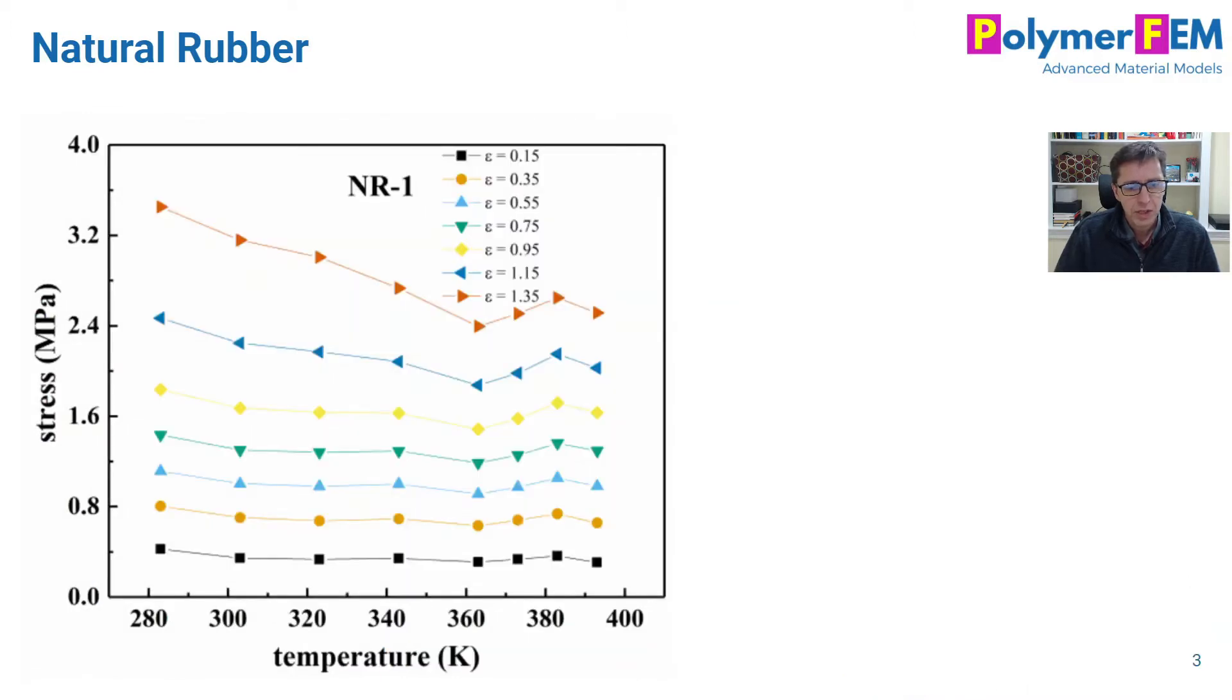You can also plot the data from that data set in a different way. So this is still natural rubber and I plotted stress versus temperature. So this is a little odd perhaps, but if you go with increasing temperatures, you see that the stress values for a given strain tend to go down a little bit here depending on the strain value. So it seems to be softening in this particular case with natural rubber, as we often see.